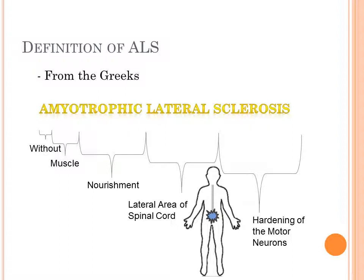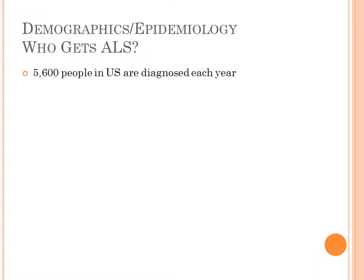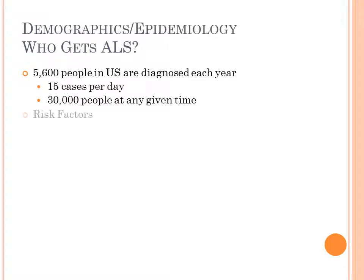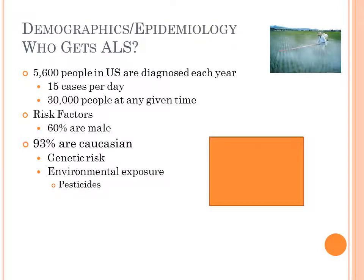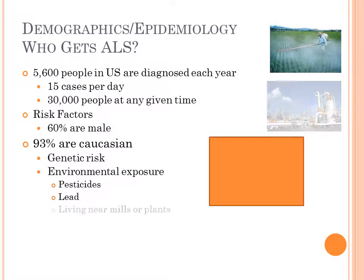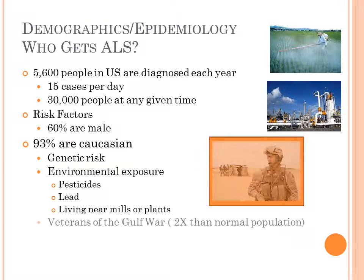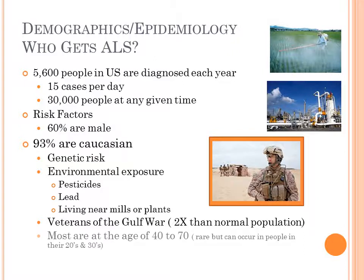Much like arterial sclerosis is a hardening of the arteries. Who gets ALS? Well, 5,600 people are diagnosed every year — that's almost 15 cases a day. Risk factors: 60% of ALS victims are male, 93% are Caucasian. There is some genetic risk, and probably environmental exposure linked to pesticides, lead, factory chemicals, living near mills or plants. Veterans of the Gulf War have a two times higher risk than the normal population.